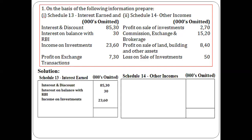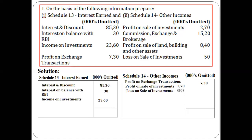Profit on exchange transactions pertains to other incomes — it is not interest earned — so it goes into Schedule 14. Profit on sale of investment is 270, but there is also a loss on sale of investment. Any item written in brackets is a negative item. So 270 minus 50 equals 220. If the profit were 270 and the loss were 300, the result would be a negative 30 in the outer column, adjusted from the overall balance.